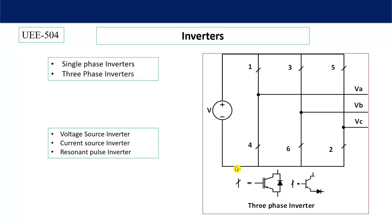This is the three-phase inverter. Likewise, two switch types exist — one for voltage source inverter and one for current source inverter. One more difference in current source inverters is that an inductor is connected in series, which I will discuss later. Here six switches — one, three, five, four, six, two — operate to produce three-phase output voltages VA, VB, and VC, which are 120 degrees out of phase.